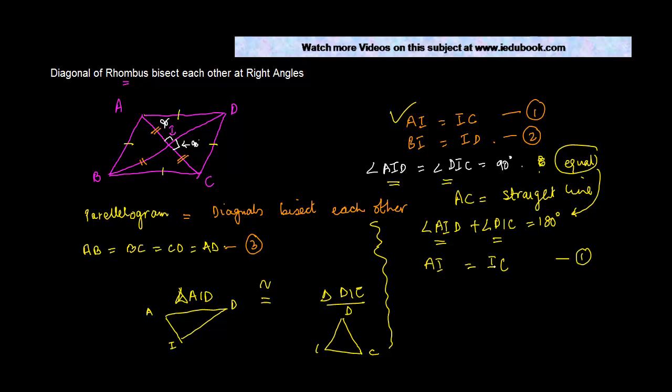Also, ID is equal to ID because this is a common side in these two triangles, this side, this side and this side.